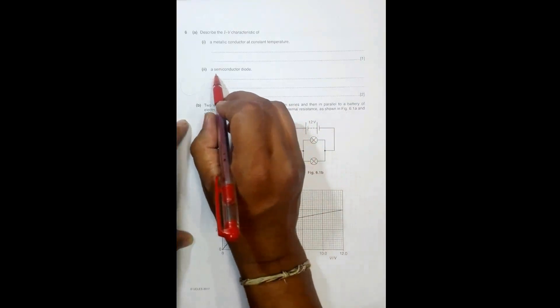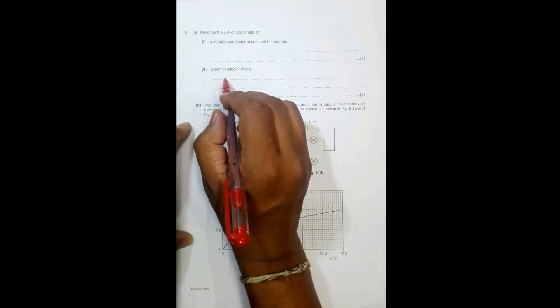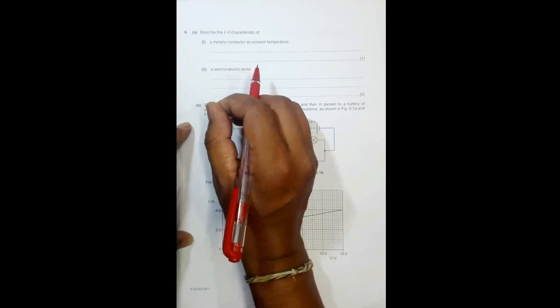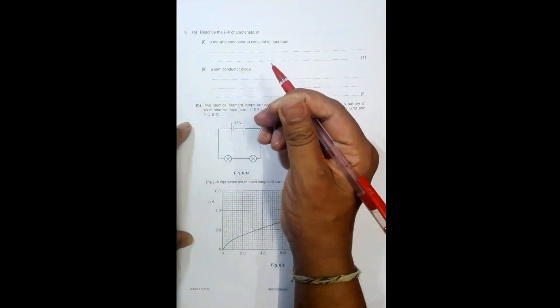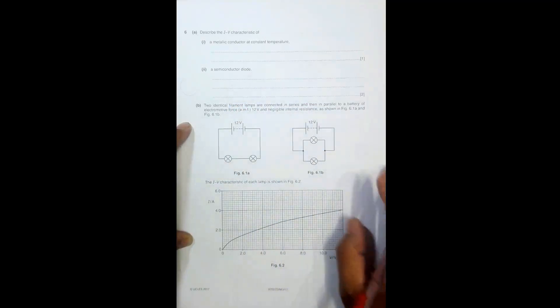In case of a semiconductor diode, at low voltages the diode does not conduct, so current is zero. After a certain voltage, for example in case of silicon diode it starts to conduct after 0.7 volt, and then the current starts to increase and increases such that the rate of increase goes on increasing with potential difference.